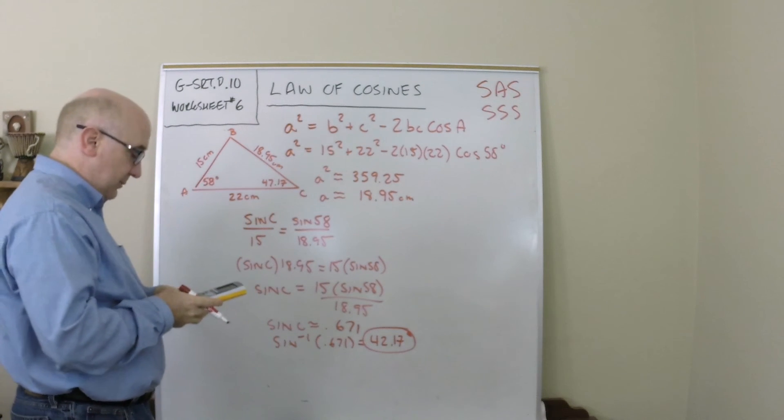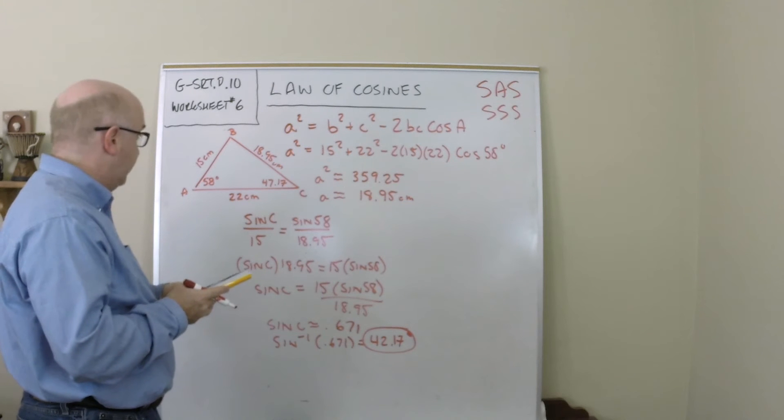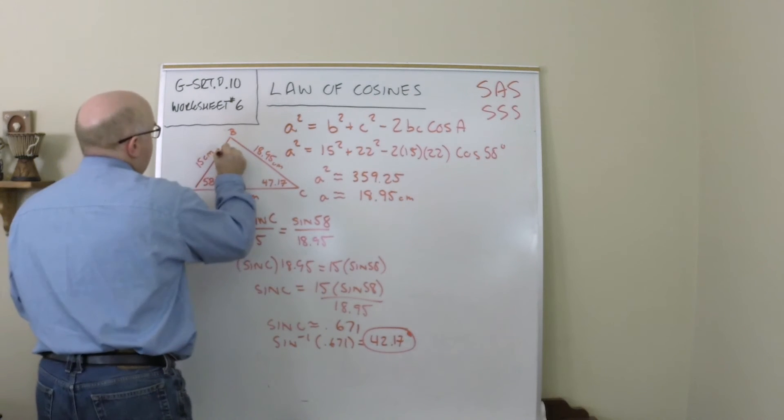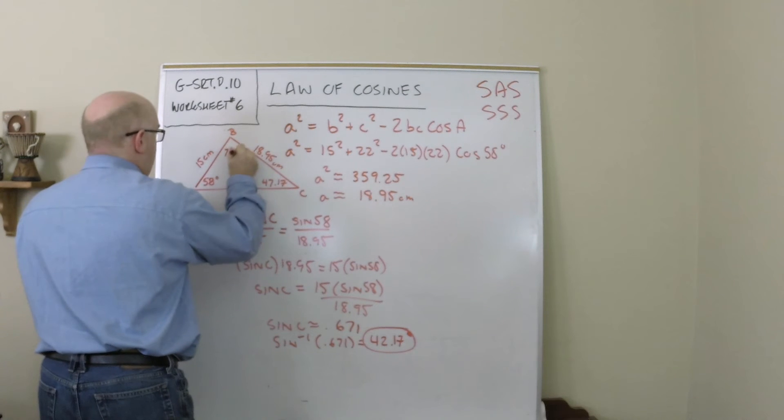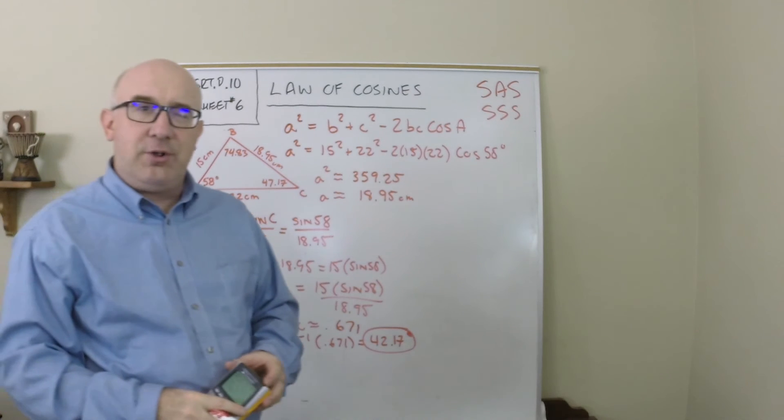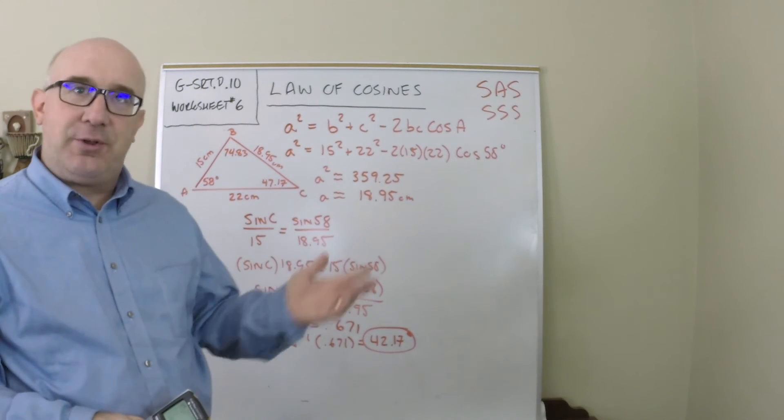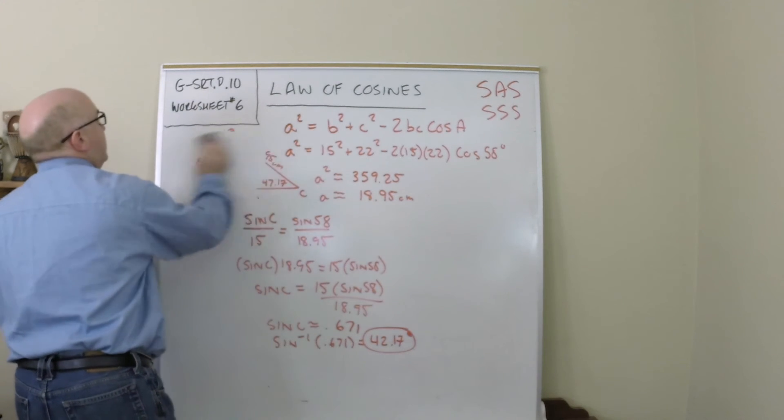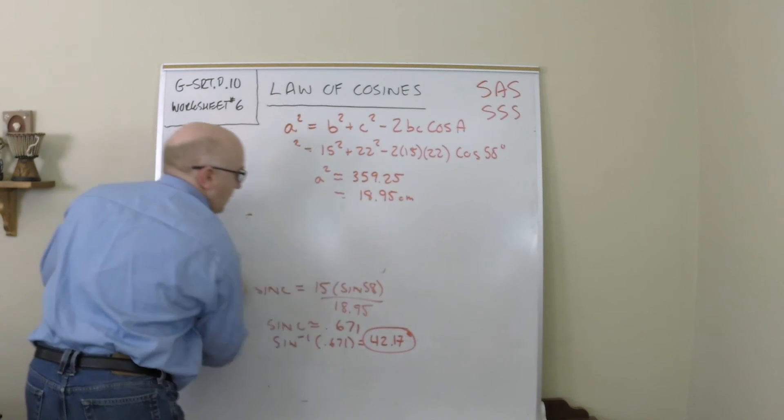So this is 42.17. I now can find the other angle by subtracting 180 minus 58 minus 42.17, and in reality this was not an obtuse angle but that's no problem, and I found all three angles and all three sides. It would be done.